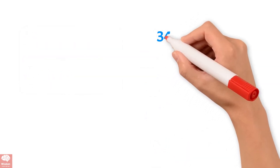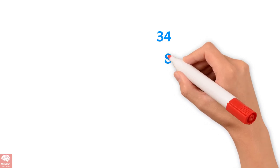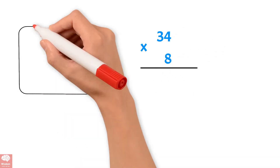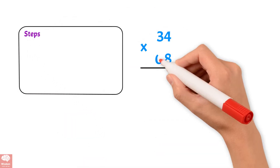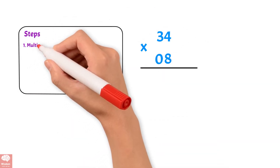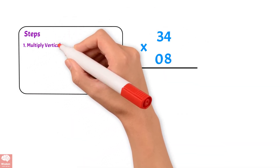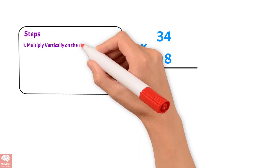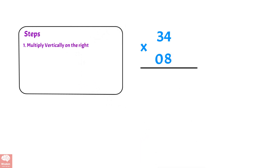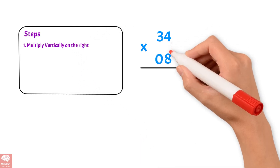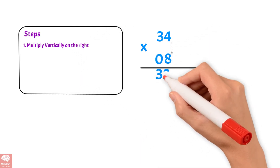Let us see the next example: 34 times 8. Step 1: Multiply vertically on the right. 8 times 4, we get 32.